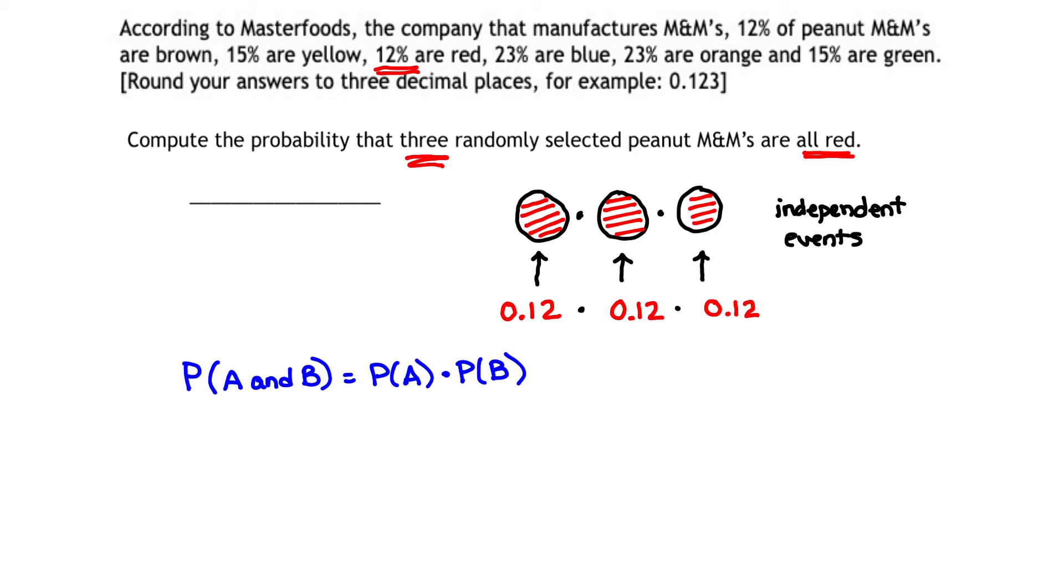In words, if I want to find out what is the probability that three M&Ms are all red, I will simply take the probability that the first is red times the probability that the second is red times the probability that the third is red.